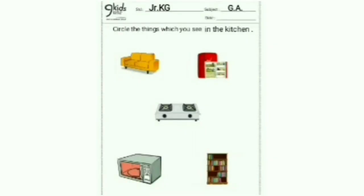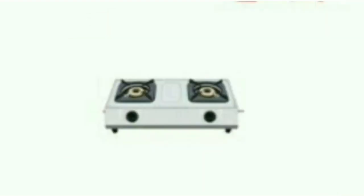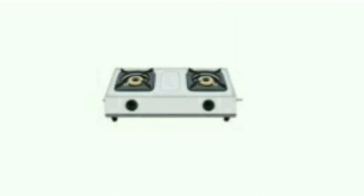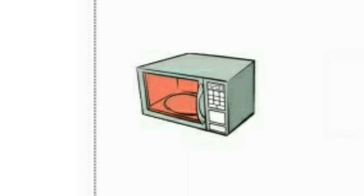Children, in this worksheet, we have to circle the things which we see in the kitchen. Do we see a sofa in our kitchen? No, so we will not circle the sofa. Do we see a refrigerator in the kitchen? Yes, so we will circle it. Do we see a microwave in the kitchen? Yes, so we will circle the microwave.